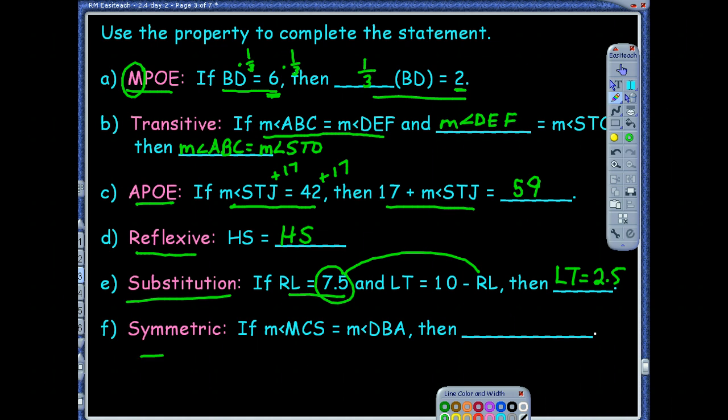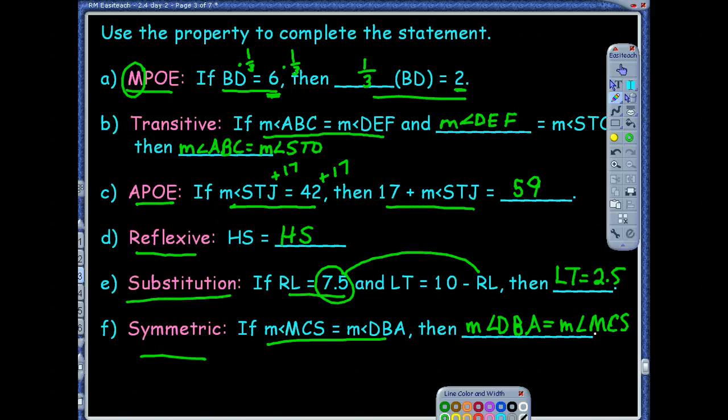Symmetric. Last one. That's the one that just flips the order. So I'm going to say that the measure of angle DBA is equal to the measure of angle MCS. And I like how you said it just flips the order. So you're given this true equality statement. You're just rewriting it. It means the same thing. But notice they're just flip-flopped.